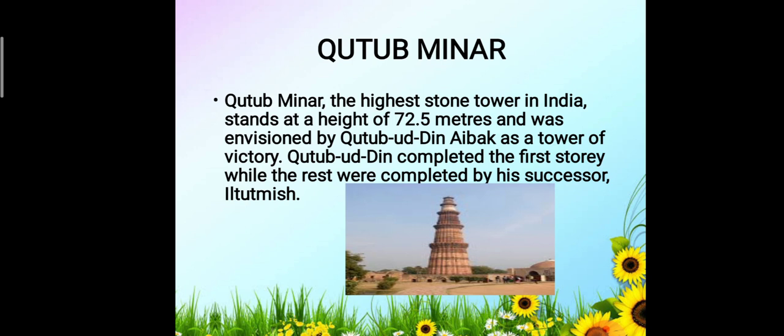The highest stone tower in India stands at a height of 72.5 meters and was envisioned by Qutubuddin Aibak as a tower of victory. Qutubuddin Aibak completed the first story while the rest were completed by his successor Iltutmish. It is located in Delhi and was started in 1199. It now has seven stories, each separated by a balcony. The inner walls are beautifully inscribed with quotes from the Quran. Iltutmish was Qutubuddin Aibak's successor and son-in-law who completed the monument.